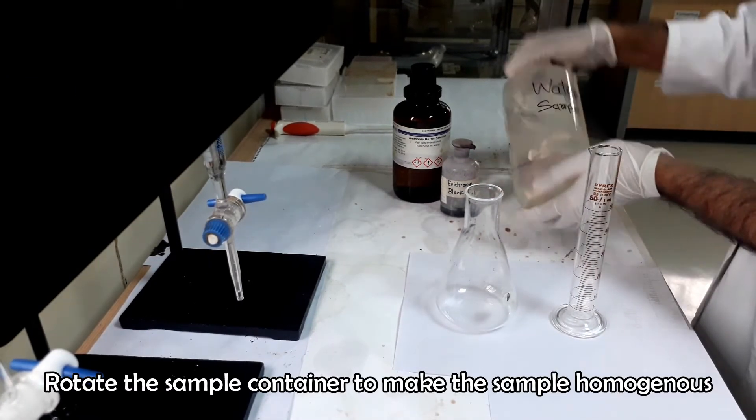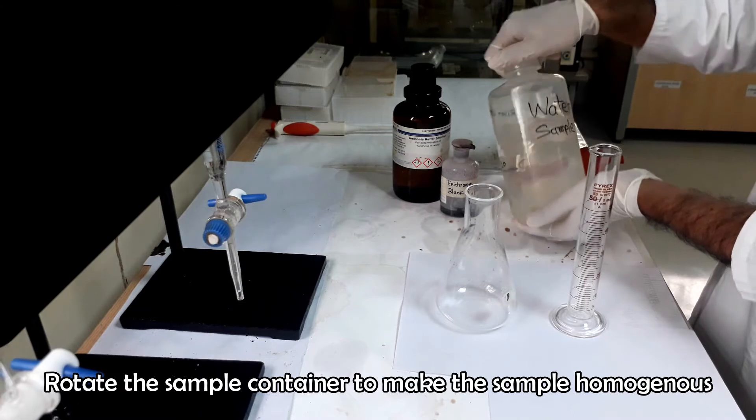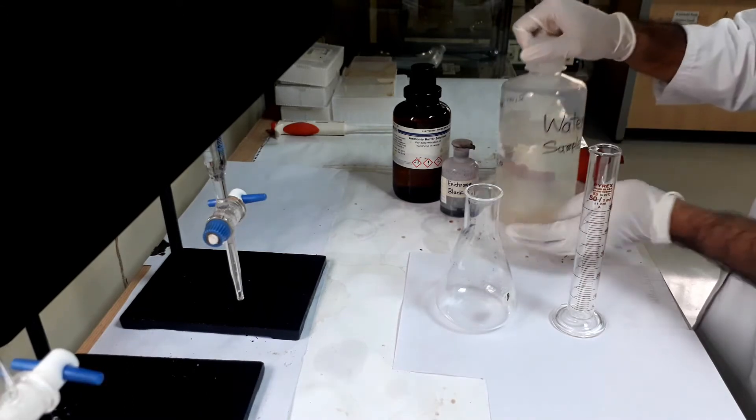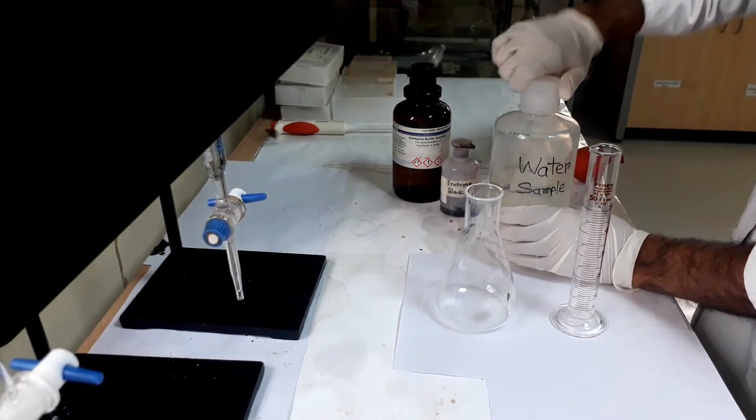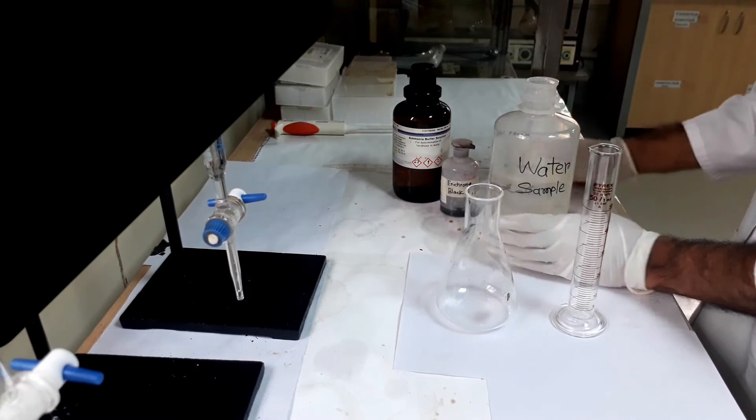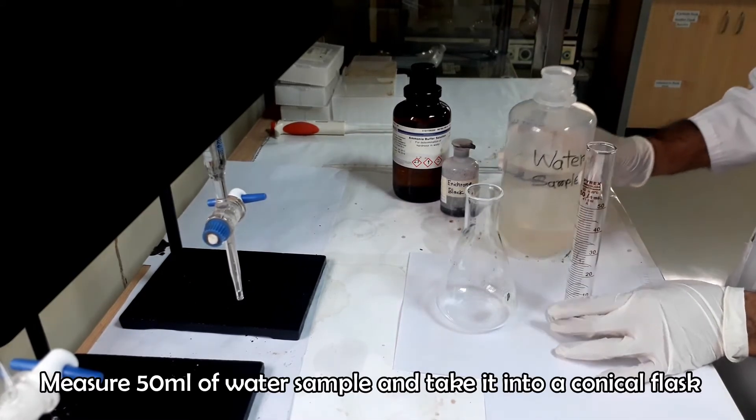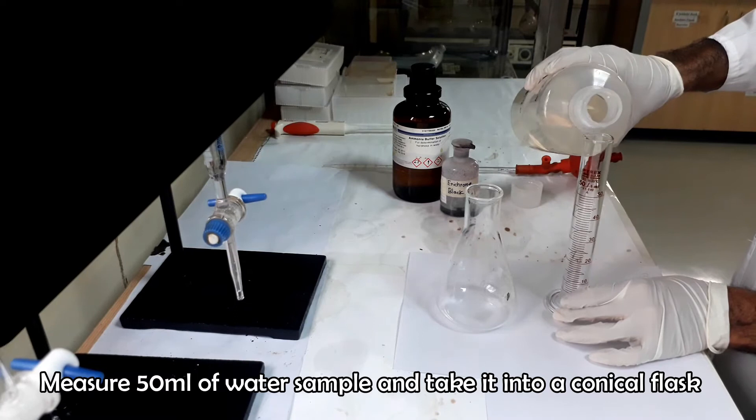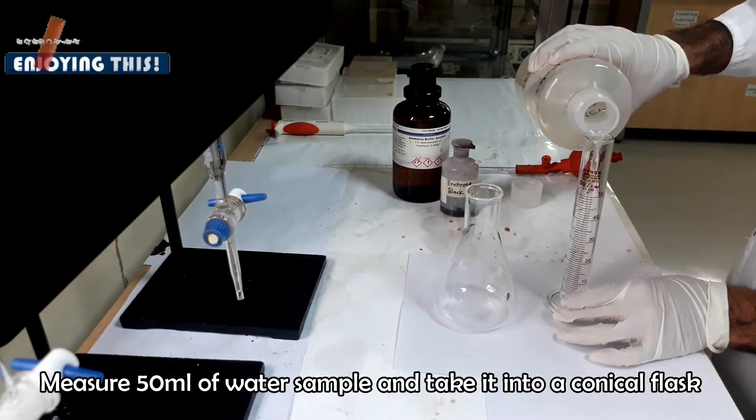Rotate and shake the sample container to mix the water sample homogenously. Measure 50 ml of water sample and take it into a conical flask.